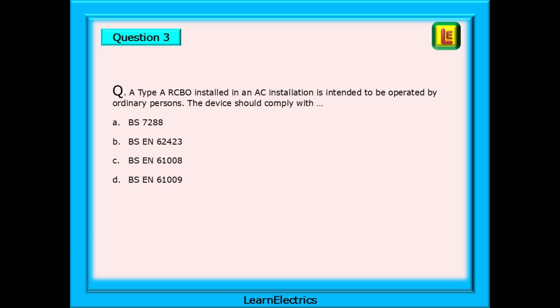Question 3 next. A type A RCBO installed in an AC installation is intended to be operated by ordinary persons. The device should comply with which of the listed standards.